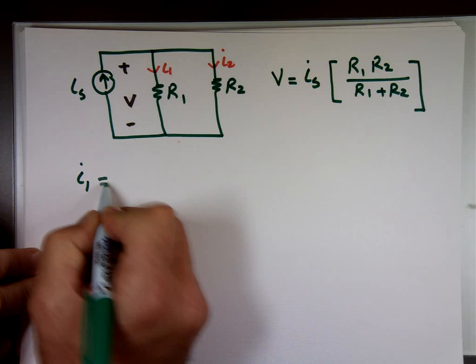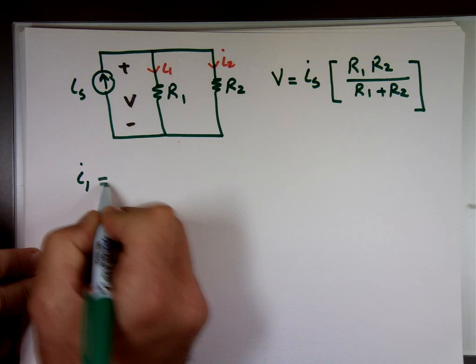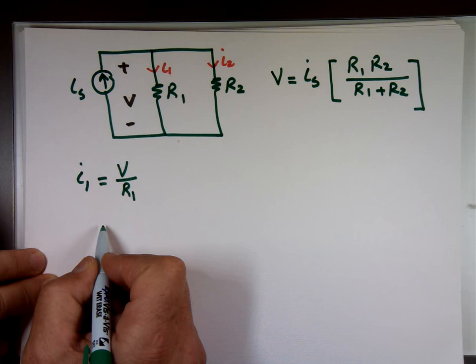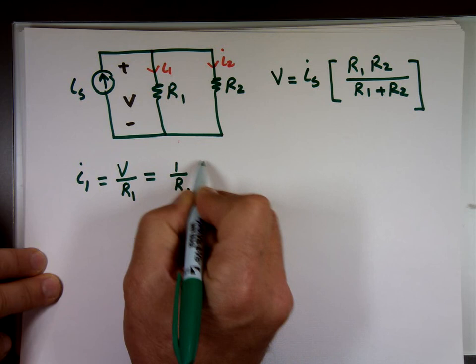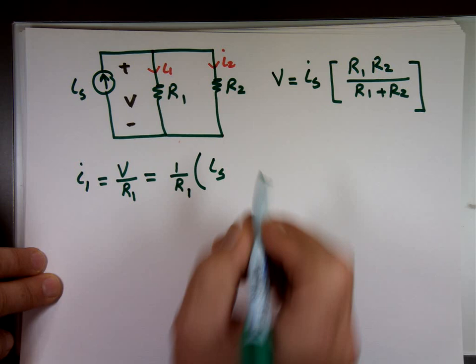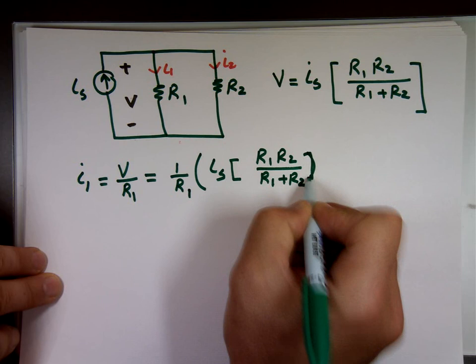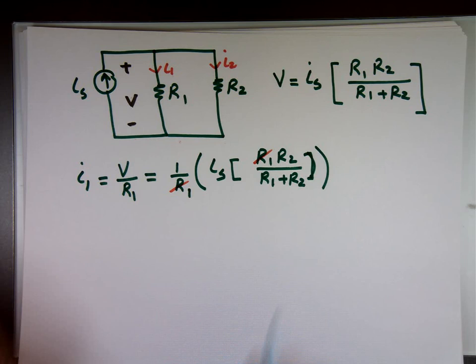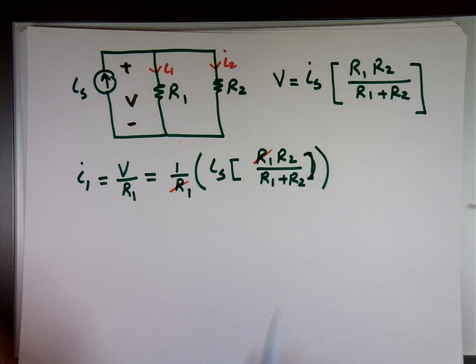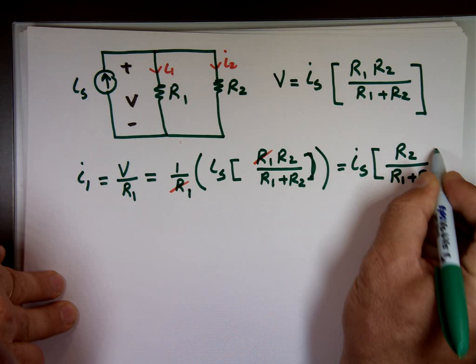Now, can I find what I sub 1 is? V over R1. We know what V is, so it's 1 over R1 times. What is V? I sub S times R1, R2 over R1 plus R2. And if you look, what happens to R sub 1? Cancel out, and your answer is what? It's I sub S times R sub 2 over R sub 1 plus R sub 2.